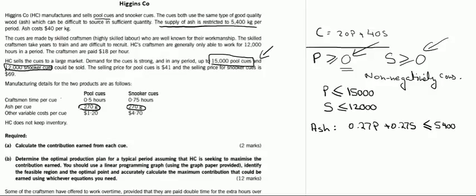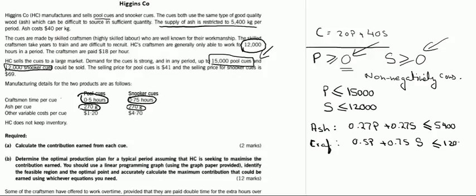We were also provided with the limit on labor hours — 12,000 hours — and the individual hours required for production of pool and snooker cues. Therefore the labor or craftsman equation will be: 0.5p + 0.75s ≤ 12,000. We have now identified all six constraints and our objective function.